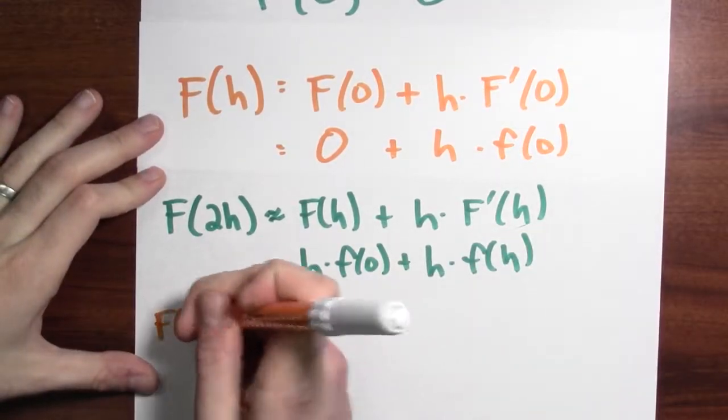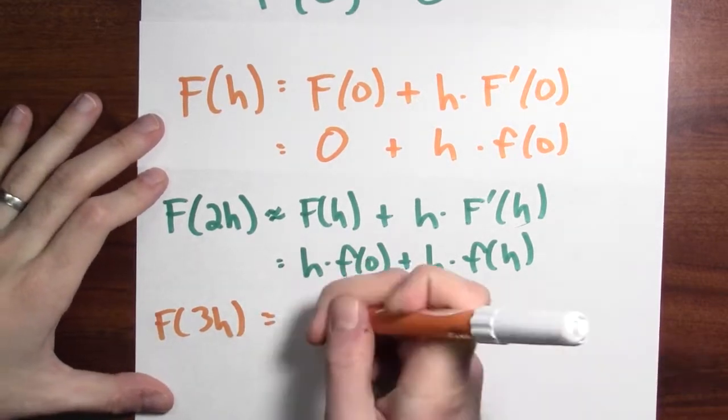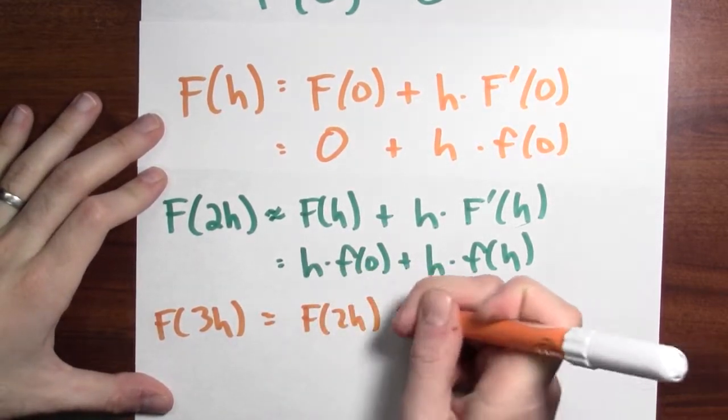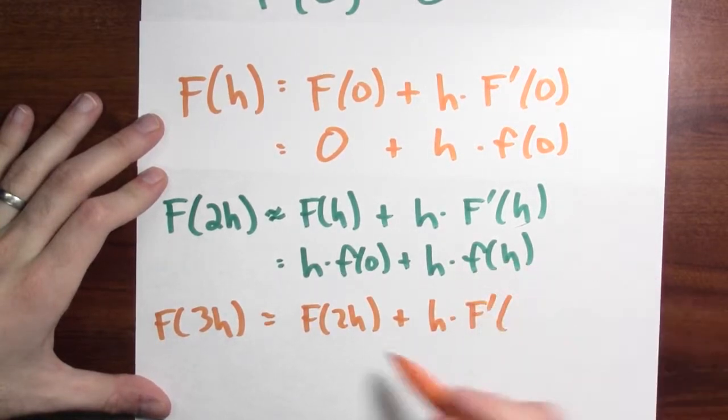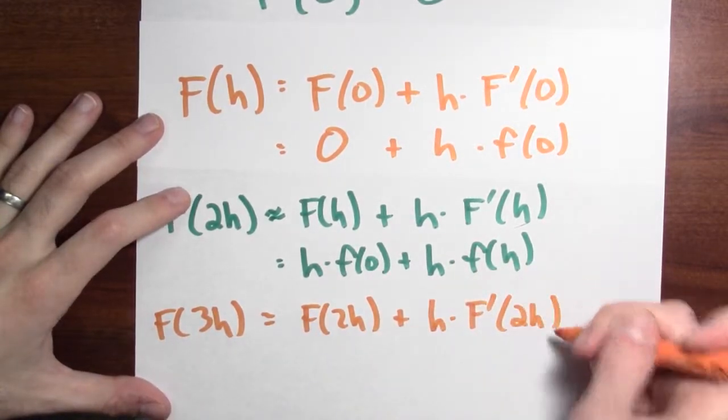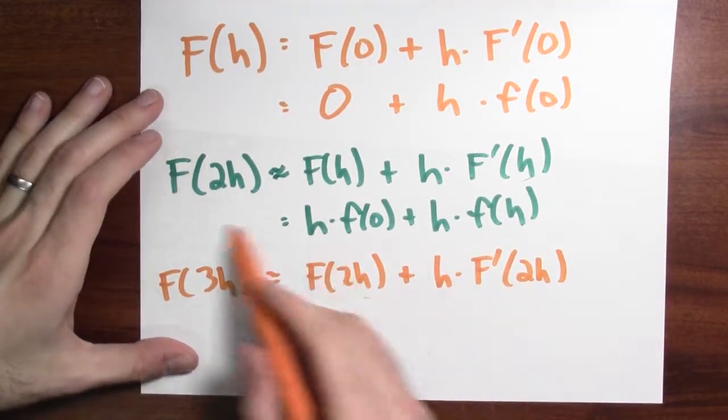So, this is the method of Euler, right? I want to approximate big F at 3h. Well, that'll be big F at 2h plus how much I wiggled by, which is h times the derivative of big F at 2h. And what do I know? Well, I've already got an approximation for big F at 2h. It's right here.